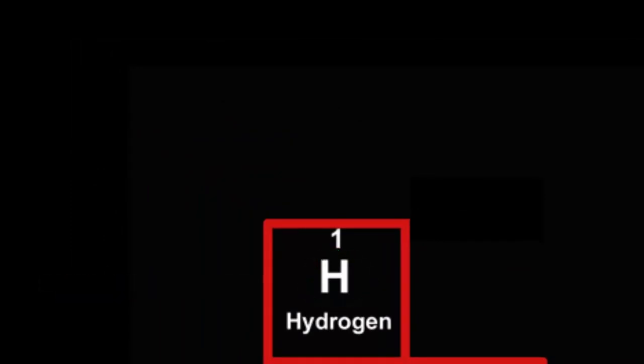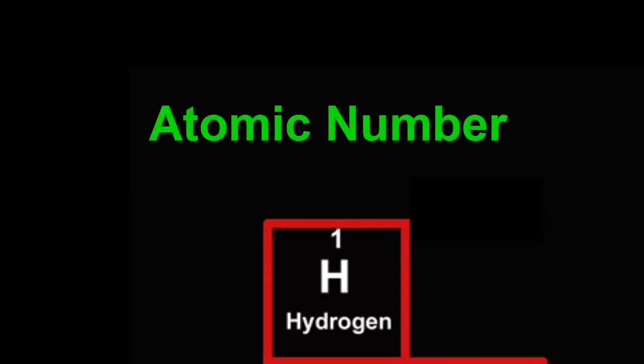Each element also has its own number showing its place in this list, called its atomic number. Hydrogen is the lightest element, so its atomic number is 1.